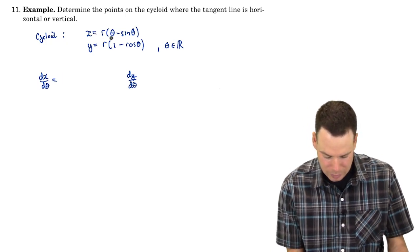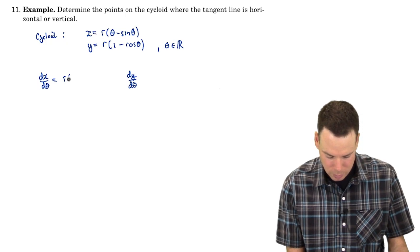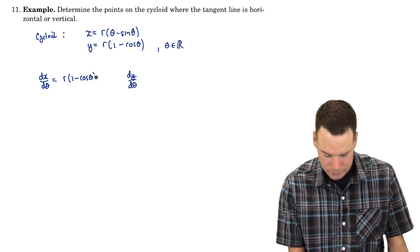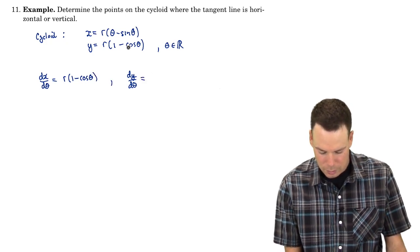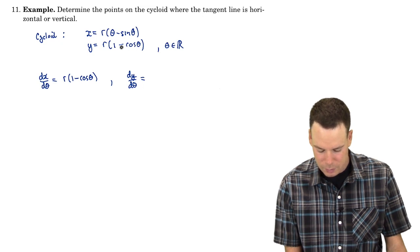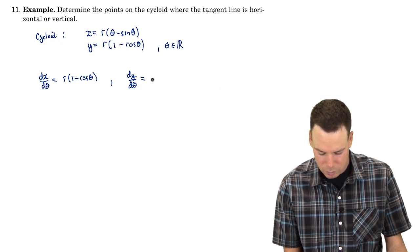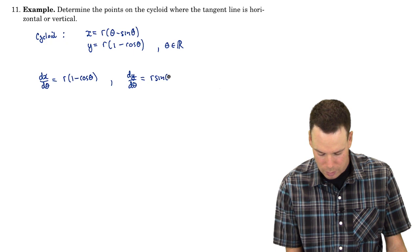So what's dx by d theta? That is r times 1 minus cos theta. And the derivative of y, well the derivative of cosine is negative sine, the negatives cancel, so this would just be r sine theta.